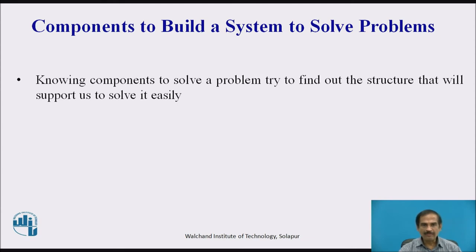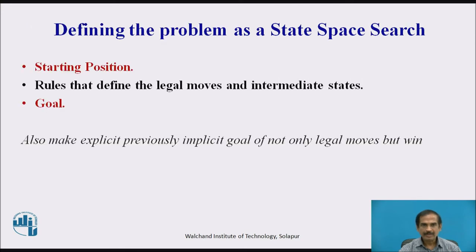Knowing the components to solve a problem, we now try to find out the structure that will support us to solve it easily. As we define a problem as a state space search, we go through three criteria that have to be fulfilled: we must identify a starting position, define rules — legal moves that take us from this starting position through intermediate states — and finally define a goal, making explicit previously implicit goals of legal moves and sometimes a winning condition.